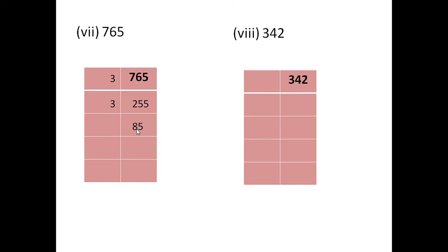Now, 85 is an odd number. There is 5 in the unit place. Also, if you add the digits, 5 plus 8 is 13, which is not divisible by 3. So, the next prime number after 3 is 5. We will take 5 as the prime factor. If you divide 85 by 5, you will get 17.